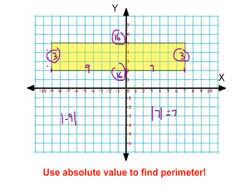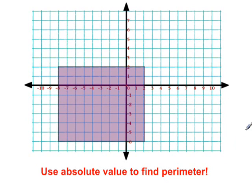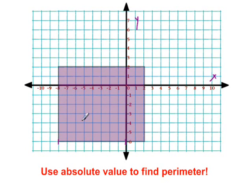Let's take a look at another example. Let's use absolute value to help us calculate the perimeter. Let's start with the base. From here to here, negative eight is how far from zero on the x-axis? Well, it's eight units away — the absolute value of negative eight is eight. And then from here to here, how far is two from zero? It'd be two. So eight plus two, our base would be 10.